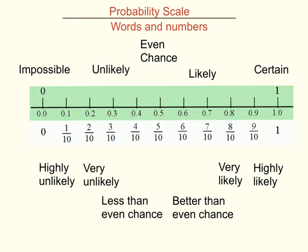To help us with that, we use some words. If the probability is 0, that means it's impossible and can never happen. If the probability is 1, it is certain to happen — it must happen. If the probability is a half, or 5 tenths, that's an even chance.